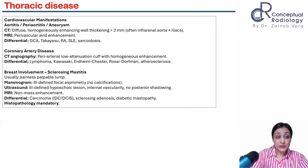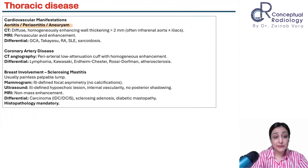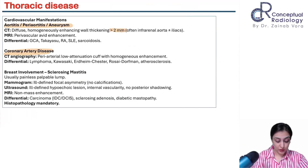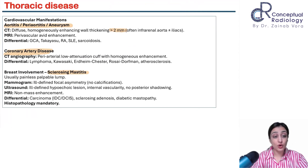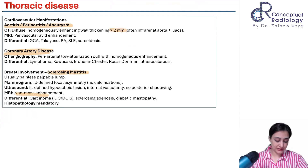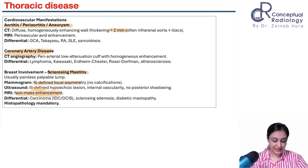To complete thorax: aortitis and aneurysm are very important — any aortic wall thickening more than 2 mm mimics vasculitis. Coronary artery can also show thickening. Breast involvement causes sclerosing mastitis — important as it presents as a palpable lump but on MRI shows non-mass enhancement and ill-defined asymmetry rather than a discrete mass.